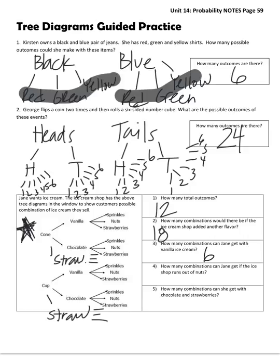How many can she get if the ice cream shop runs out of nuts? So you take away 1, 2, 3, 4, and that leaves you with 8. Okay, number 5. How many combinations can she get with chocolate and strawberries? I see one there and another there. So 2.